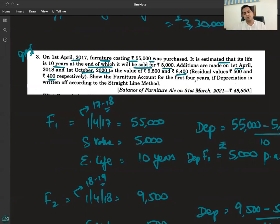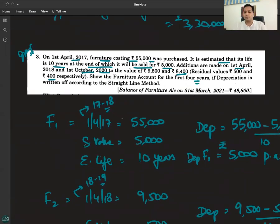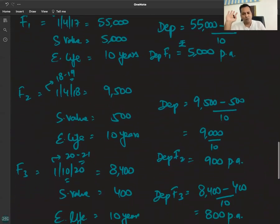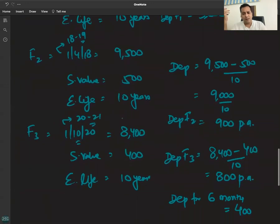Show furniture account for first 4 years. The information is in front of you. I have also told you the depreciation amount, how to calculate it. All information is there. I hope you can create the account by yourself now.